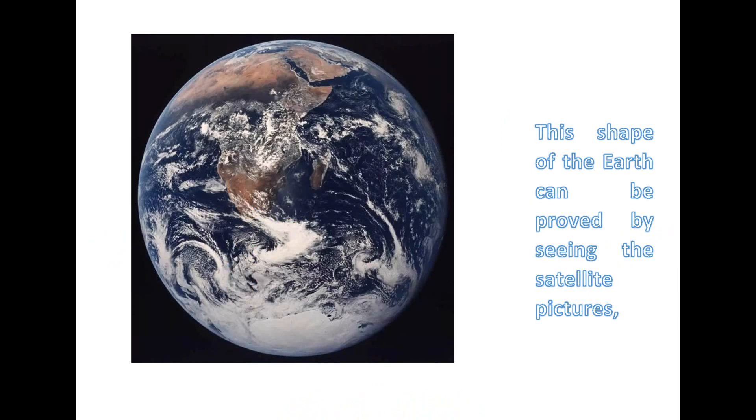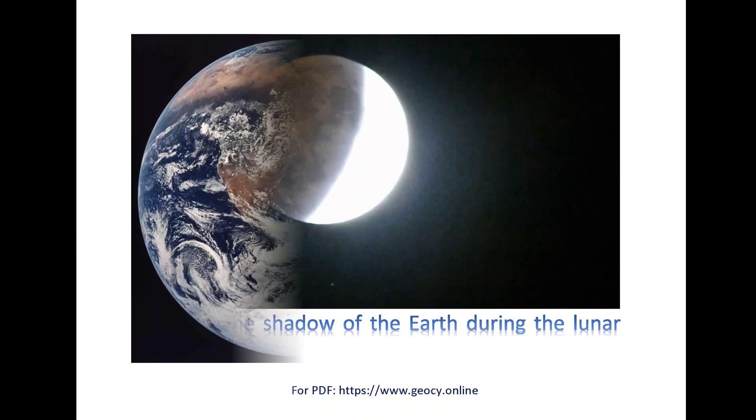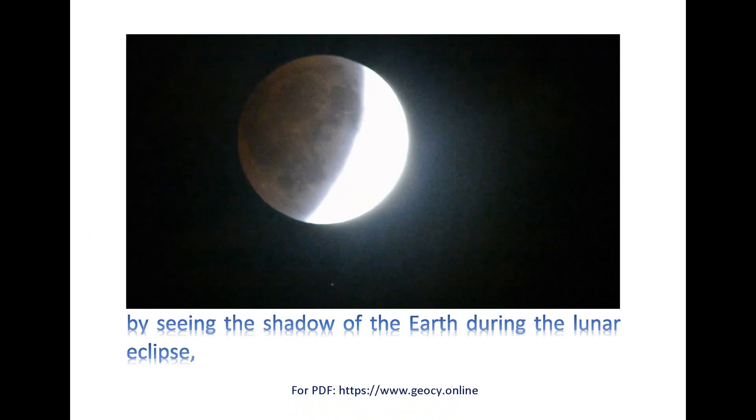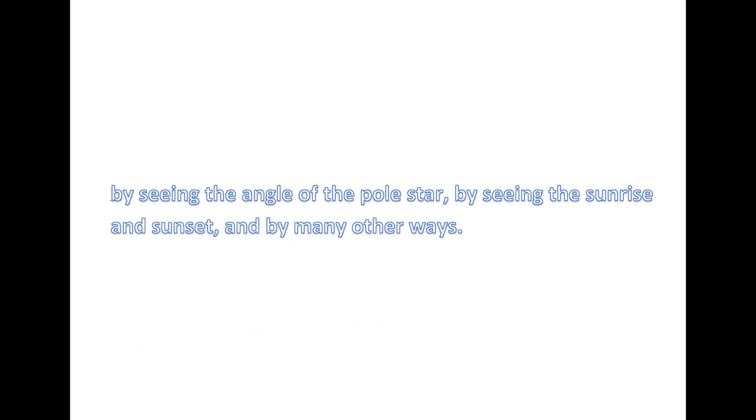This shape of the earth can be proved by seeing the satellite pictures, by seeing the shadow of the earth during the lunar eclipse, by seeing the angle of the pole star, by seeing the sunrise and sunset, and by many other ways.